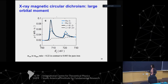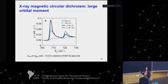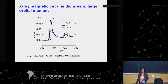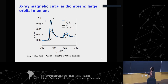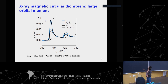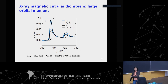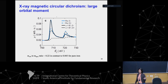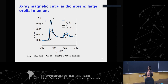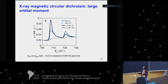One great thing about being at the Paul Scherrer Institute is having expert colleagues in X-ray techniques with the machines right there. We looked at this material using X-ray tools — one advantage is that you can separate the orbital and spin contributions to the magnetic moment, which you cannot do with a magnetometer.